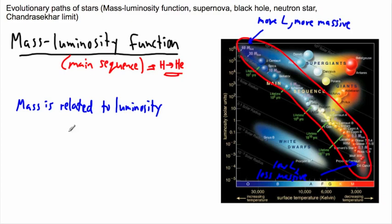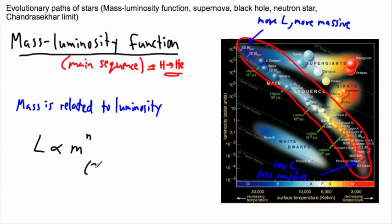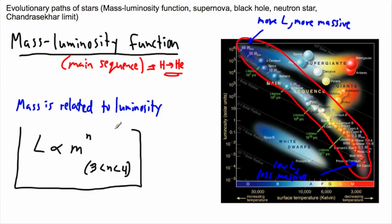So this mass-luminosity relation can actually be written like this. We could say that the luminosity is proportional to the mass to the power of n, where n is some number between 3 and 4. It turns out it's not exactly clear what it should be — there are a lot of different eventualities — but n is somewhere between 3 and 4. So this is the mass-luminosity function.